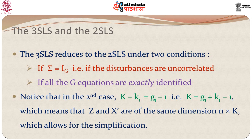The three stage least squares is better because if the equations are not exactly identified you get a different estimator. Particularly, if the disturbances are correlated, you take account of that correlation in the three stage least squares, which you do not in the case of the two stage least squares.